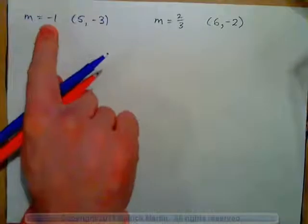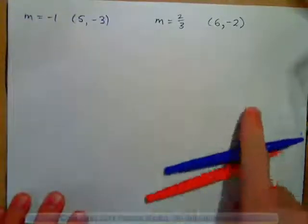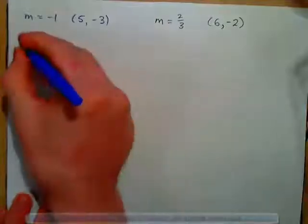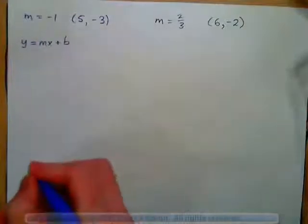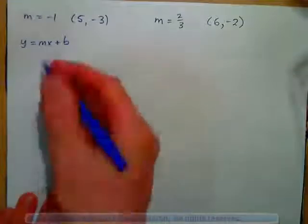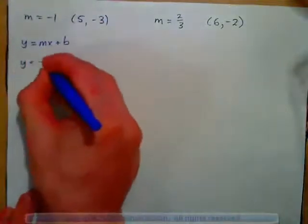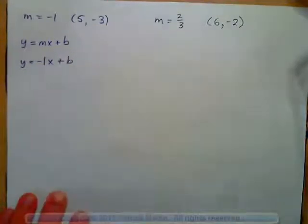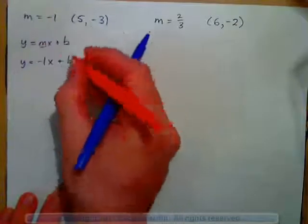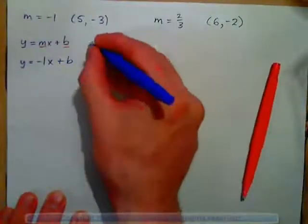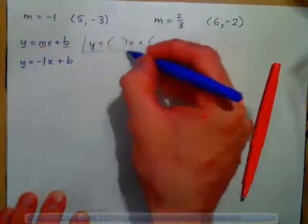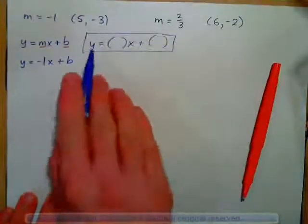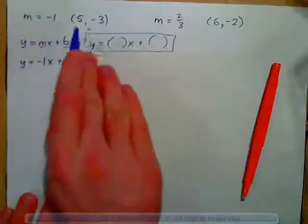Let's do a couple more examples. If you're told that your slope m is negative 1 and this point is on the line, find the equation of the line. The first step is to write down the slope-intercept form of a linear equation: y equals mx plus b. Now put in what you know — m is negative 1, so y equals negative 1 times x plus b. If you find m and b, you have the answer — you're looking for the linear equation with this slope that goes through this point.